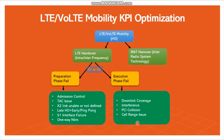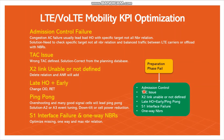Let us understand each category one by one. The first category is admission control. Admission control means the target site is congested and is not ready to accommodate the new UE. In this case, we have to balance the traffic between the LTE carrier or offload it to a neighbor site.